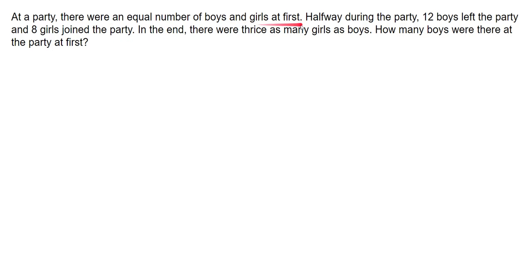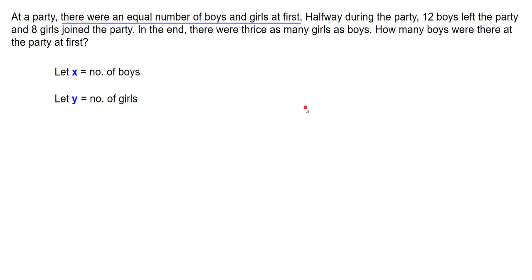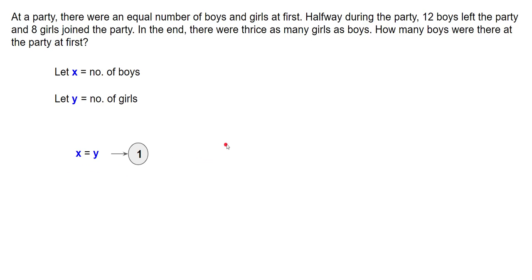There are three distinct sets of information. First, let x equal the number of boys at the party at first, and let y be the number of girls at the party at first — just like the models but using x and y. At the beginning, there were an equal number of boys and girls, so x equals y. That is equation number one. Then 12 boys left, so the remaining number of boys is x minus 12, and 8 girls joined, so the girls' total becomes y plus 8.